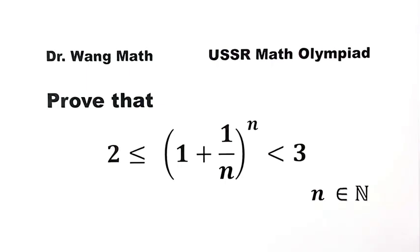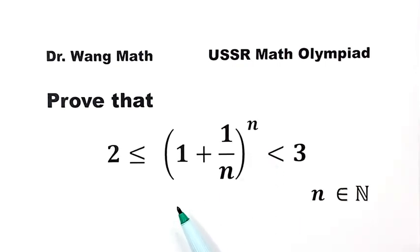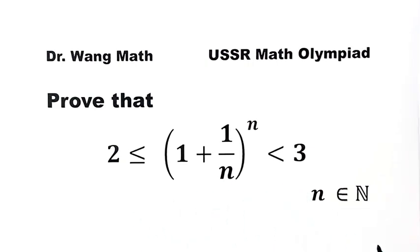In this video, we're going to tackle a question from the USSR Math Olympiad. The question is to prove that for all natural numbers n, the expression (1 + 1/n)^n is bigger than or equal to 2 and less than 3.